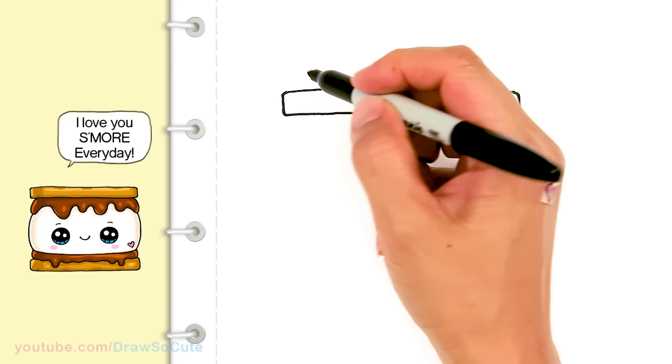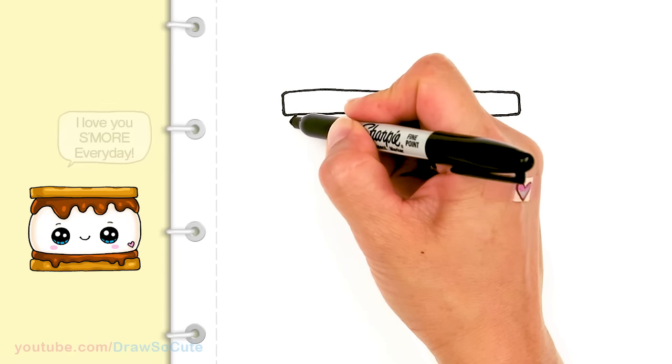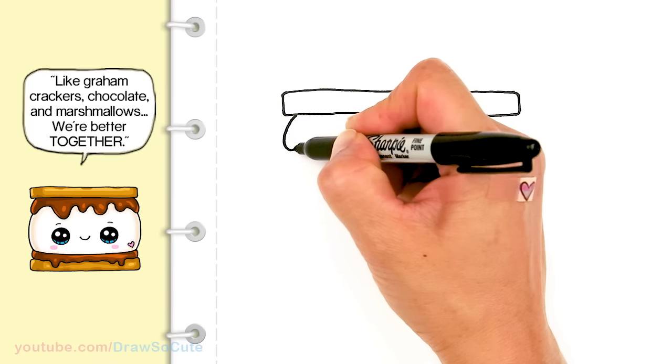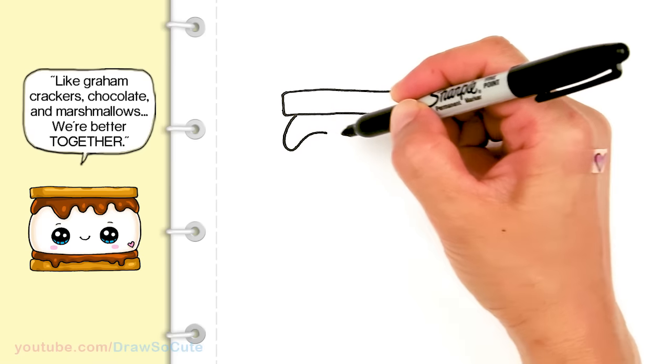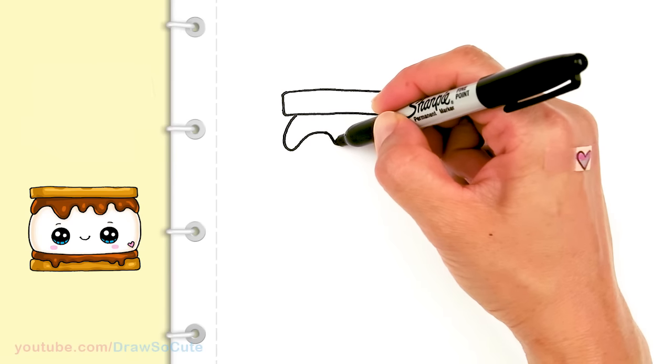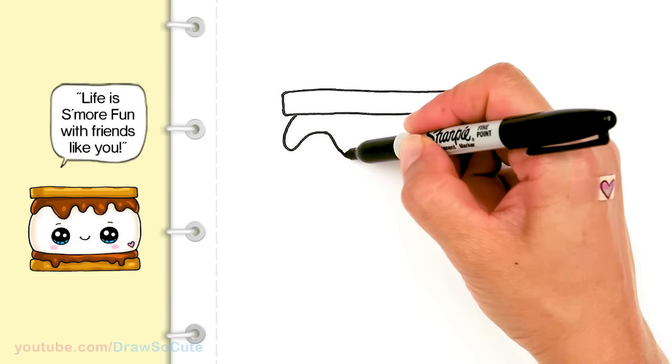Now to draw the chocolate layer that's all melted. I'm going to start right here and just draw a drizzle down. Just have fun with this part, however you want to drizzle your chocolate. Let's see here, bring it down a little bit more.